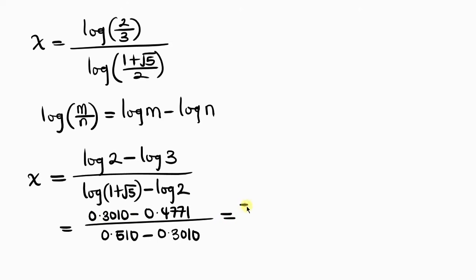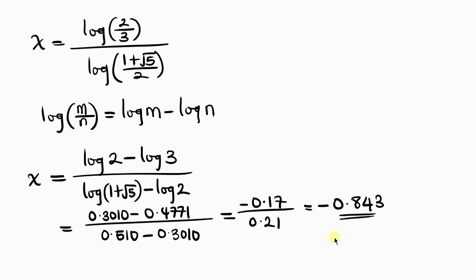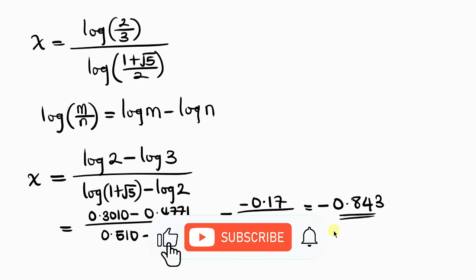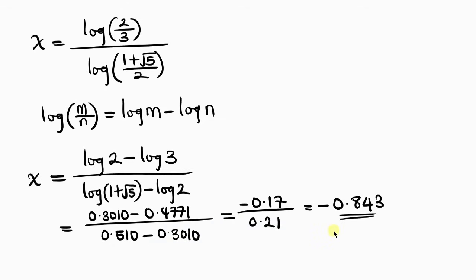Evaluating numerically: log 2 ≈ 0.3010 and log 3 ≈ 0.4771, so the numerator is approximately −0.1761. The denominator evaluates to approximately 0.21. Dividing gives x ≈ −0.843. Feel free to share your ideas in the comments below. If you enjoyed this video, give it a thumbs up, subscribe, and turn on the notification bell so you don't miss upcoming videos. Until next time, take care.